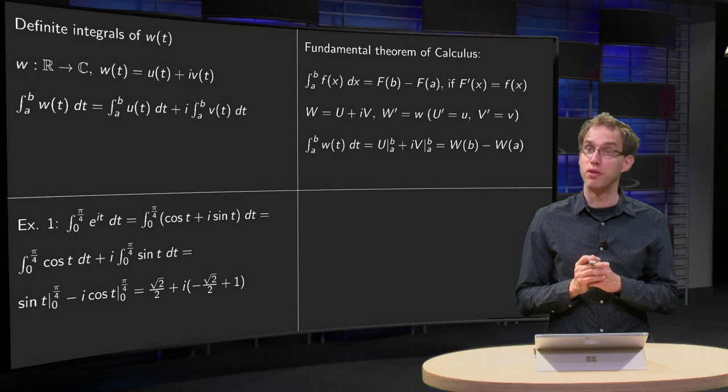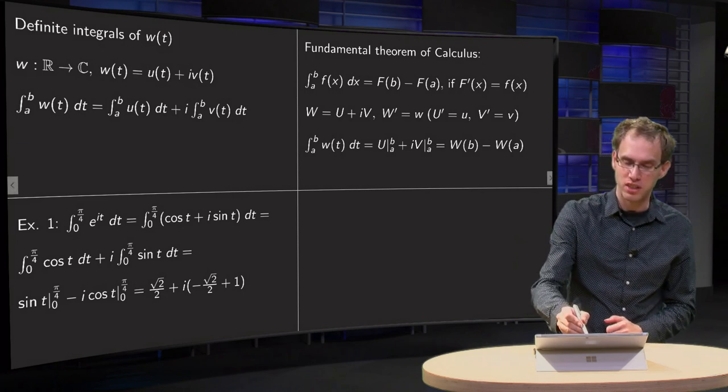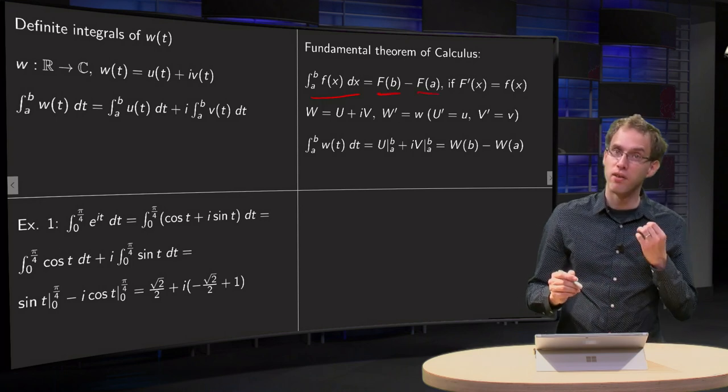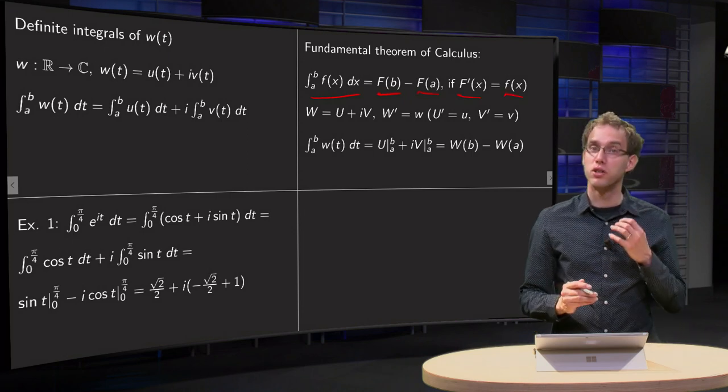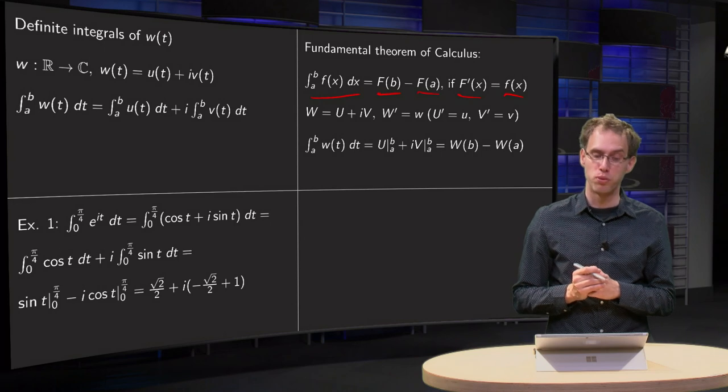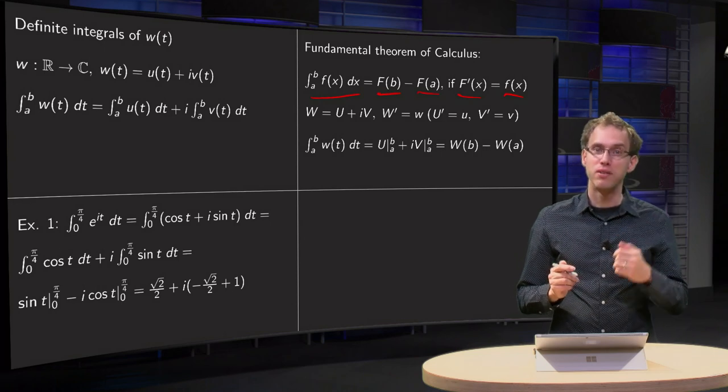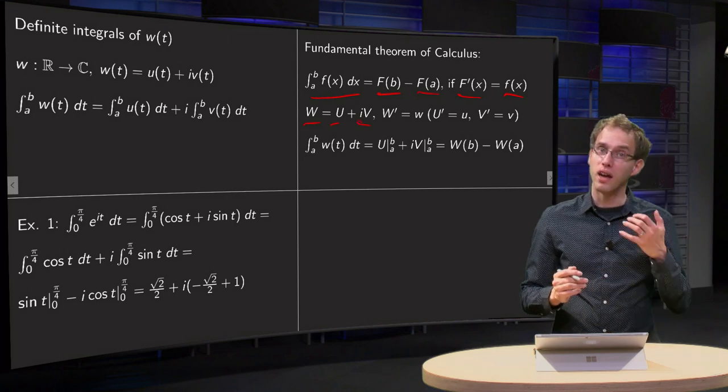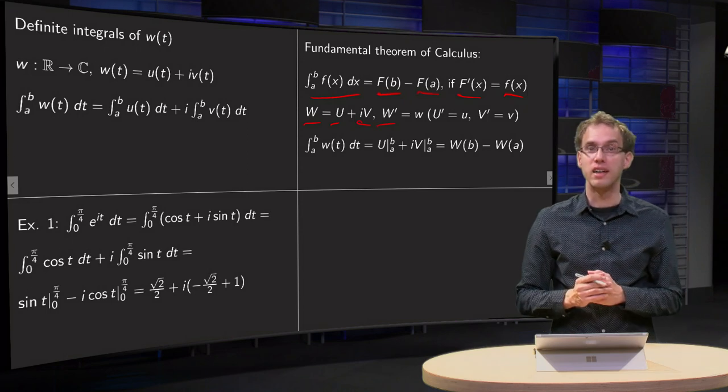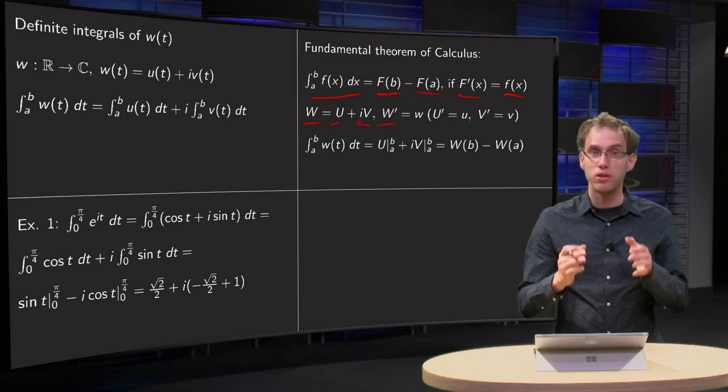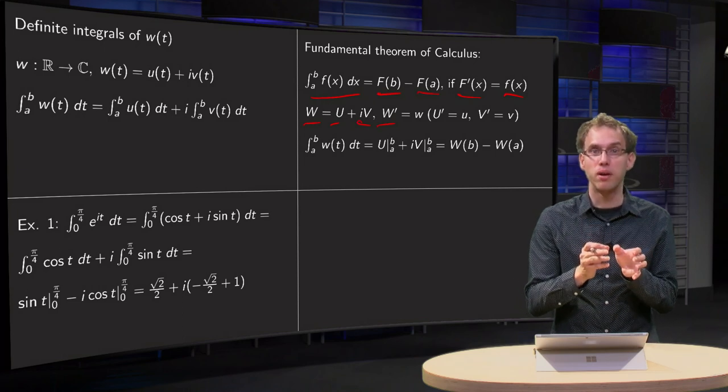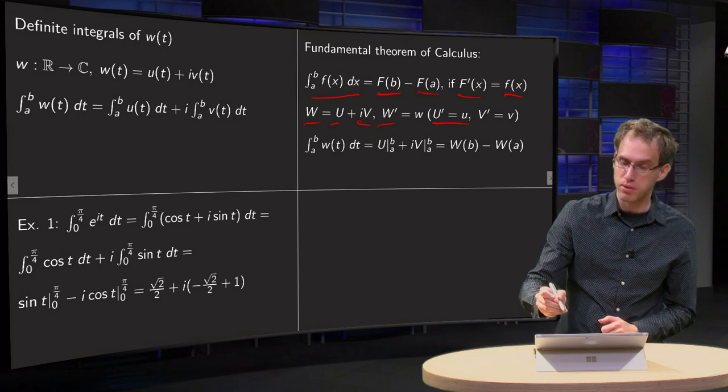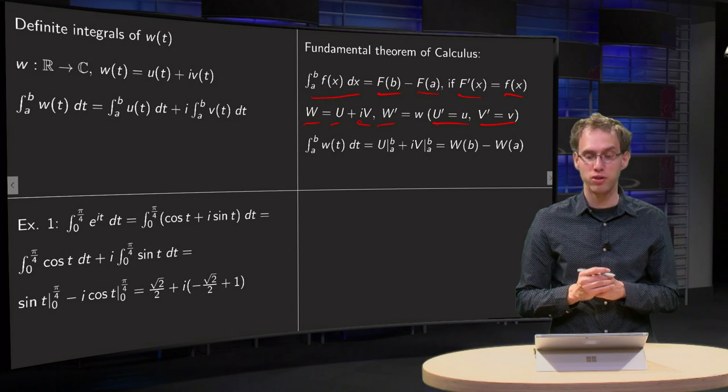So let's take a look at the fundamental theorem of calculus. What's it again? Well it says that the integral from a to b of f(x) dx equals F(b) minus F(a), where the derivative of capital F equals small f, so capital F is called an antiderivative of small f. Now if we set capital W equals capital U plus i times capital V, and if we compute the derivative of capital W, we get the derivatives separately, so derivative of capital U plus i times derivative of capital V. Derivative of capital U equals small u, derivative of capital V equals small v.